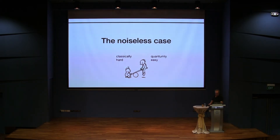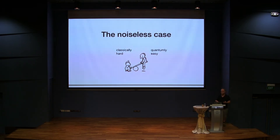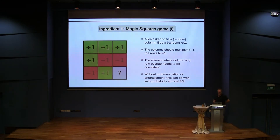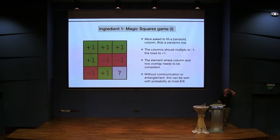The challenge here is to find a problem that strikes a balance between being hard for classical computers and easy for quantum computers. The inspiration we take is the fact that if we have locality constraints, then there are many instances where we see a quantum advantage. The example we pick — the starting place for us — is the magic squares game that hopefully many of you know.